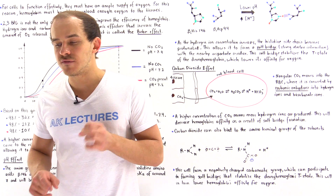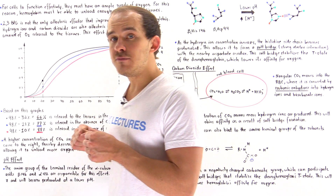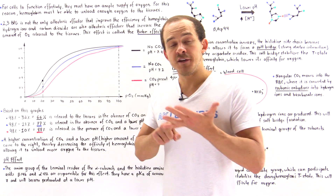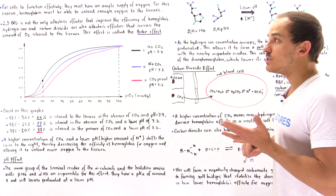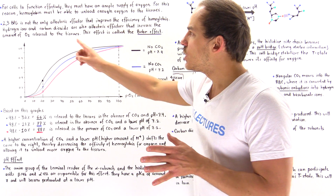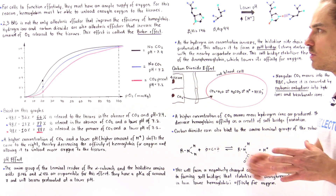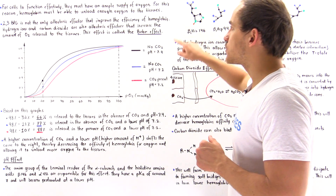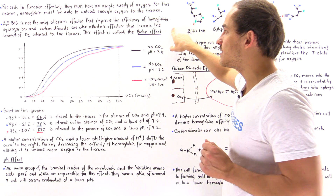There are two other molecules found inside our body, inside the red blood cells, that can bind onto a special region of hemoglobin other than the oxygen binding site and decrease the affinity of hemoglobin for oxygen, thereby shifting the oxygen binding curve to the right side. These two molecules are hydrogen ions and carbon dioxide. Hydrogen ions and carbon dioxide are also allosteric effectors that increase the amount of oxygen released by hemoglobin in the exercising tissues of our body.